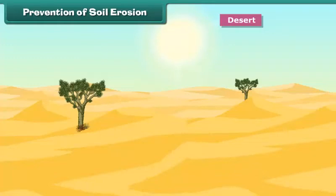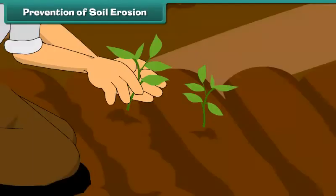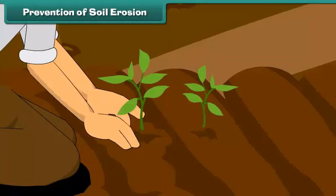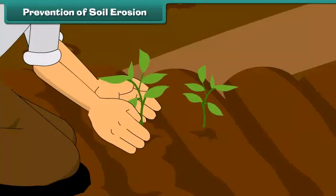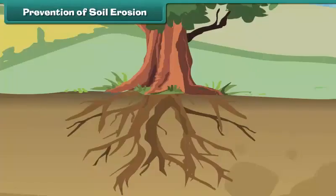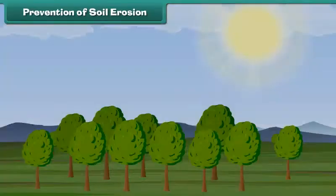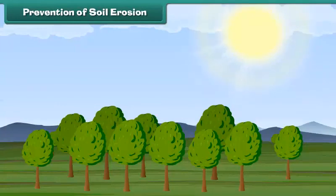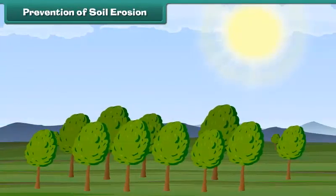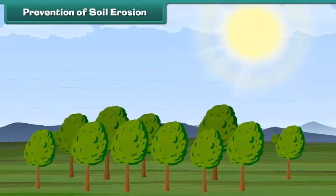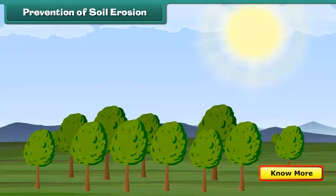There are many ways of preventing soil erosion. One of the most common ways is to grow more and more trees. The roots of trees hold the soil firmly and do not allow it to wash away easily. Trees planted across the wind direction protect soil against high-velocity winds.